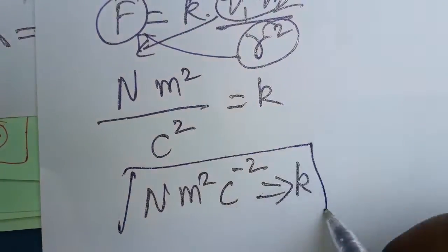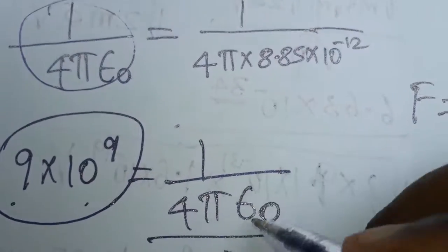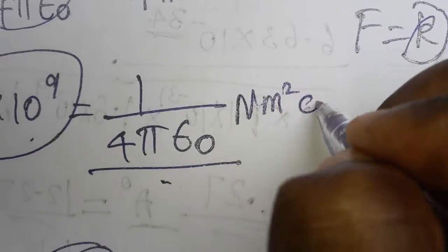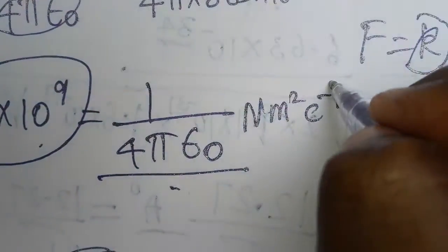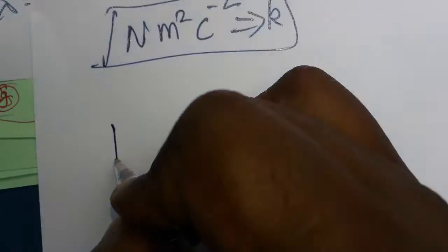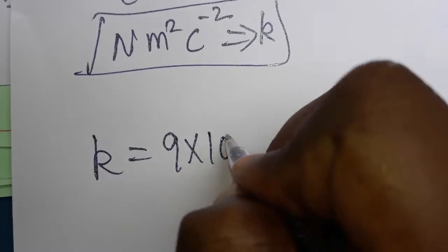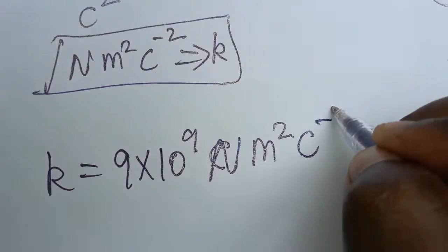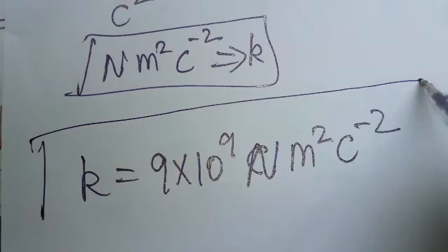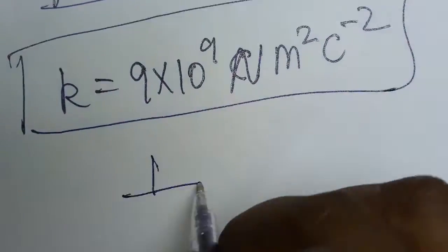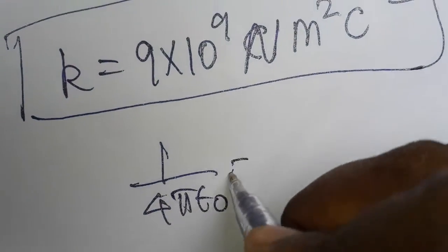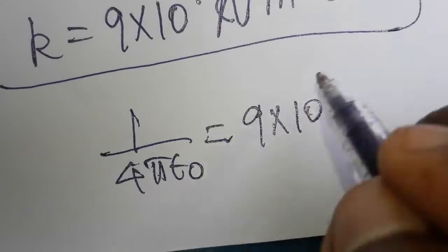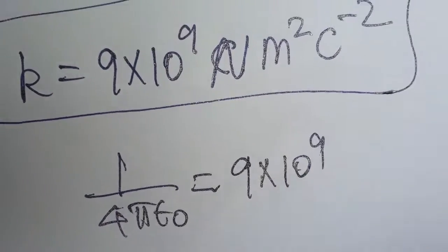So the SI unit of k, which equals 1 divided by 4 pi epsilon naught, is newton meter squared coulombs to the power minus 2. The final value of k is 9 into 10 power 9 newton meter squared coulombs minus 2. Instead of using 1 divided by 4 pi epsilon naught, you can simply use 9 into 10 power 9 — it is easy to memorize. Thank you.